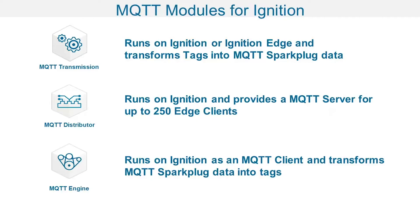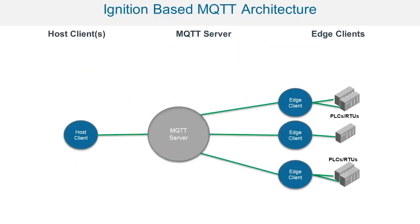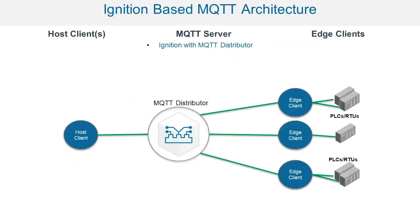Let's look at using MQTT modules for Ignition and a different architecture. MQTT Transmission takes tags in an Ignition tag database and publishes them using MQTT Sparkplug. MQTT Engine, conversely, subscribes to Sparkplug messages and automatically creates Ignition tags. And finally, we have a module called Distributor that provides an MQTT server as an Ignition module. Using those components, we can install MQTT Distributor and have our MQTT server functionality.